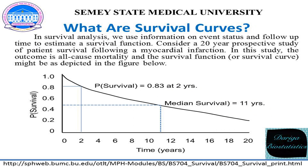In survival analysis, we use information on event status and follow-up time to estimate a survival function. Consider a 20-year prospective study of patient survival following a myocardial infarction. In these studies, the outcome is all-cause mortality and the survival function, or survival curve, might be best depicted in the figure below. The horizontal axis represents time in years, and the vertical axis shows the probability of surviving. At time 0, the survival probability is 1, or 100% of the participants are alive.